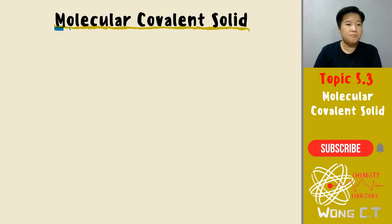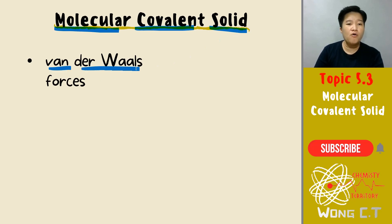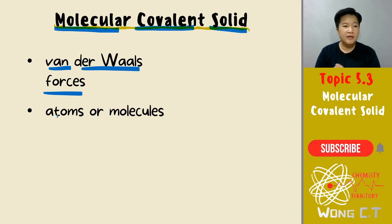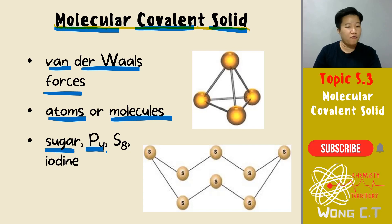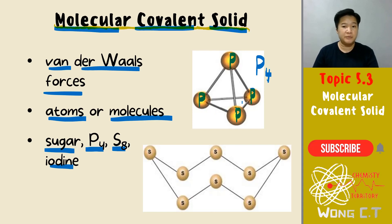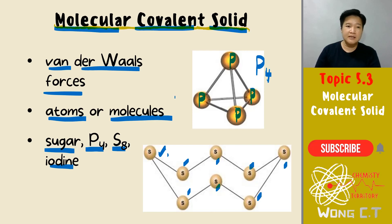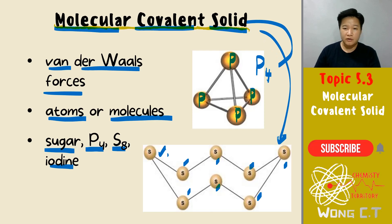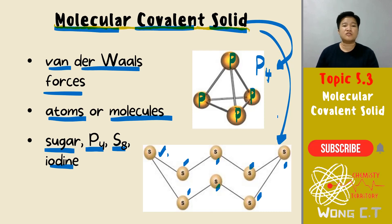Last but not least, molecular covalent solid — these have van der Waals forces. Molecular covalent solids can exist as atoms or molecules depending on what you have. Examples: sugar, P₄ (phosphorus), S₈ (sulfur), and iodine. P₄ has four phosphorus atoms connected together, and S₈ has eight sulfur atoms — that is what your molecular covalent solid looks like for P₄ and S₈.